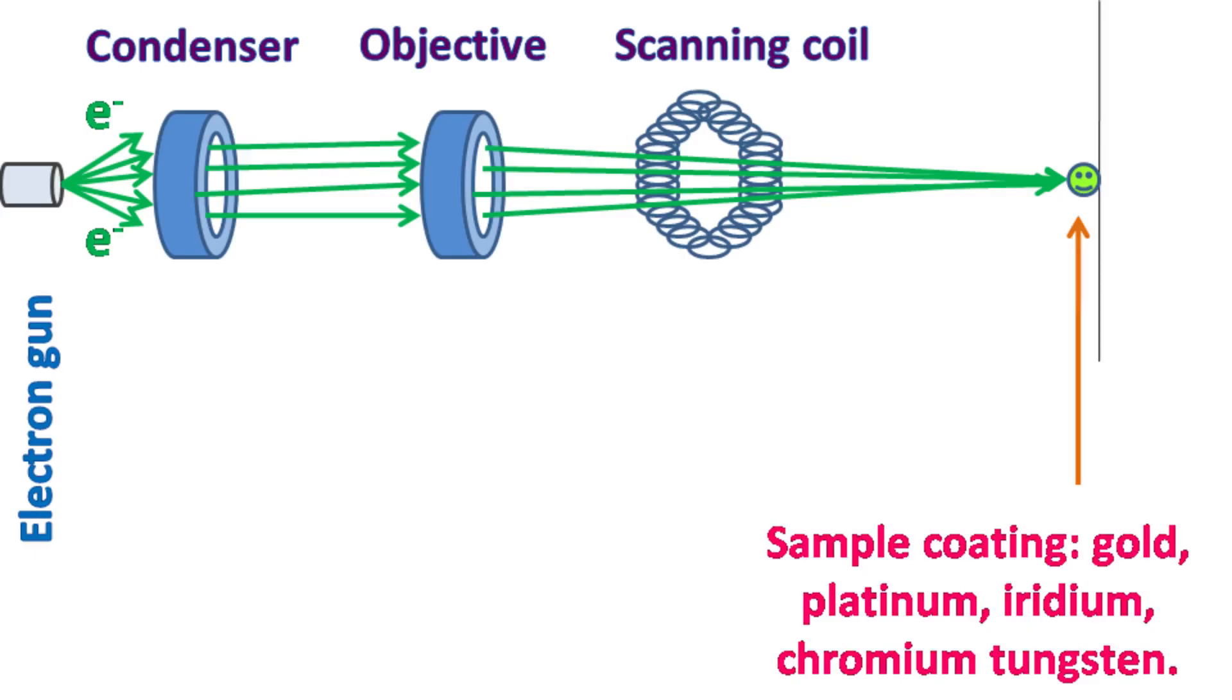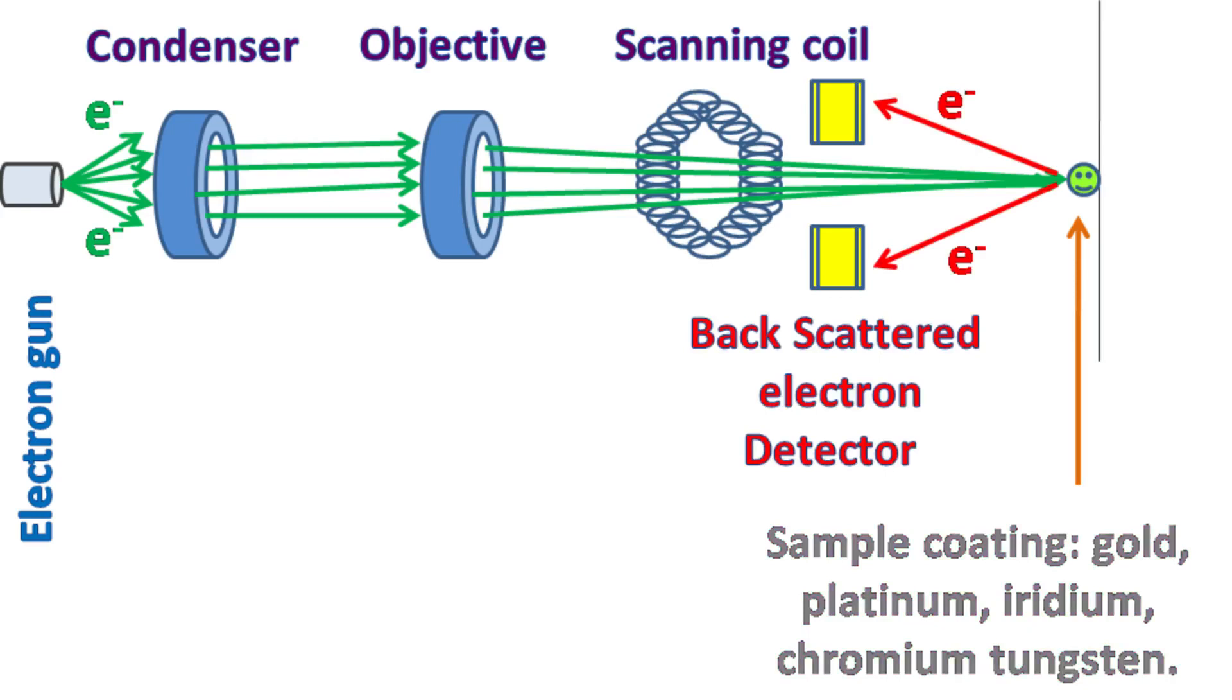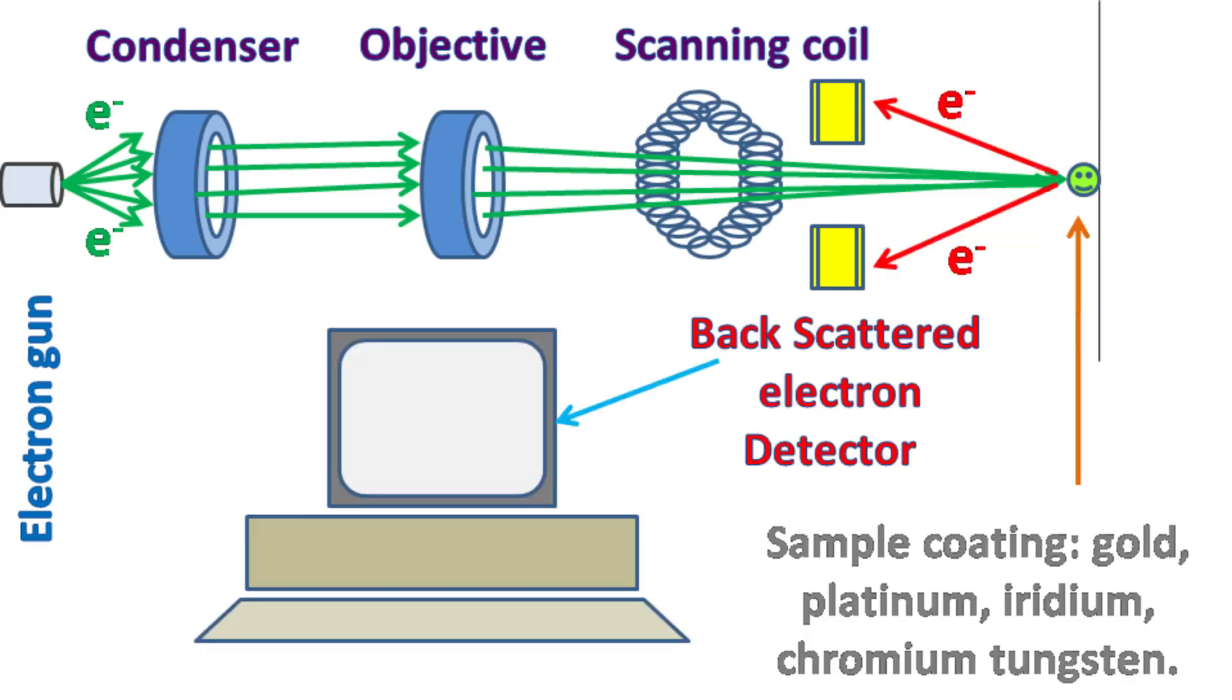The specimen is coated with heavy metals like gold, platinum, iridium, chromium, and tungsten. The presence of these heavy metals on the surface allows the electrons to be scattered. The scattered electrons are detected by electron detector. And finally, information about the surface of the specimen is obtained on the computer.